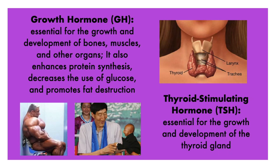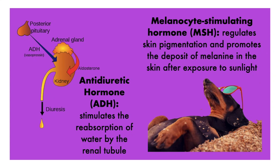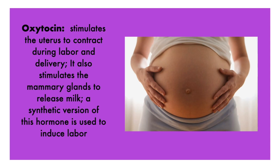We have the thyroid stimulating hormone, which is important for the growth and development of the thyroid gland. The antidiuretic hormone, or ADH, focuses on reabsorption of water — dehydration under heat usually causes a sharp increase of ADH, primarily reducing water loss by lowering urine volume. Then we have the melanocyte stimulating hormone, which focuses on skin pigment and promotes the deposit of melanin in the skin after exposure to sunlight. Then we have oxytocin, which focuses on labor and delivery of the child, and also stimulates prolactin, which is the release of milk. Artificial oxytocin can be used to induce labor.